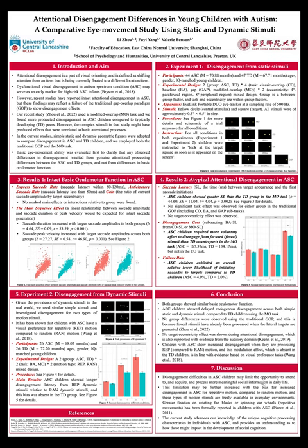In our first experiment, we adopted both traditional and modified tasks to explore disengagement across two groups of young children. Please see Figure 1 for the test procedures. We found that children with autism showed intact basic oculomotor function, but they had delayed endogenous disengagement in our modified overlap tasks. As expected, we didn't find any group differences using the traditional gap overlap paradigm. We think this is mainly because the four wheels of stimuli have already been processed when the targets are presented in the traditional tasks.